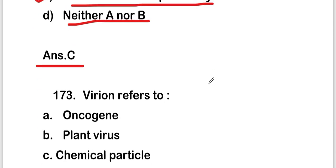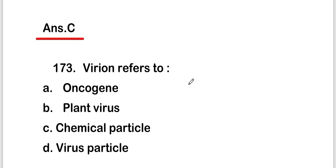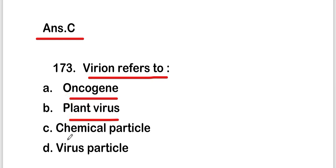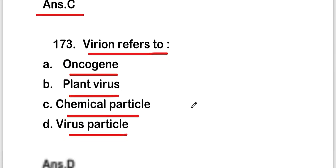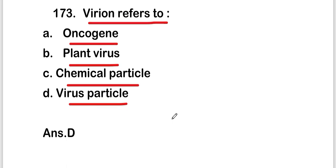Next question: 'virion' refers to — an oncogene, a plant virus, a chemical particle, or a virus particle. The right answer is option D — virus particle. So virion refers to a virus particle.